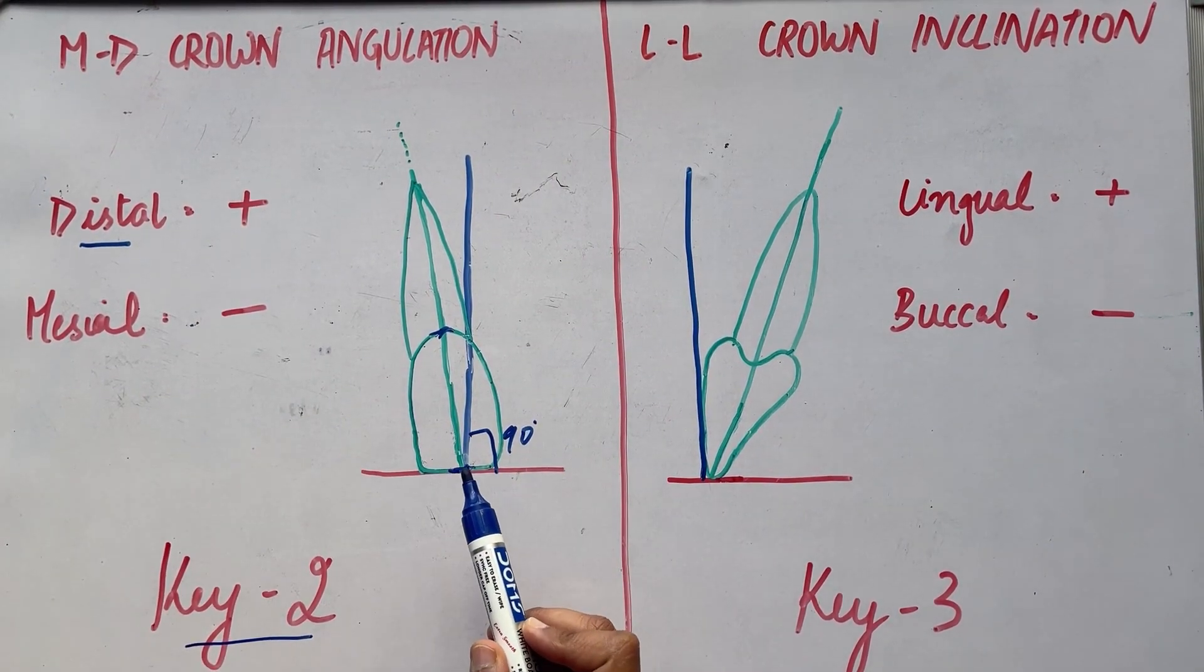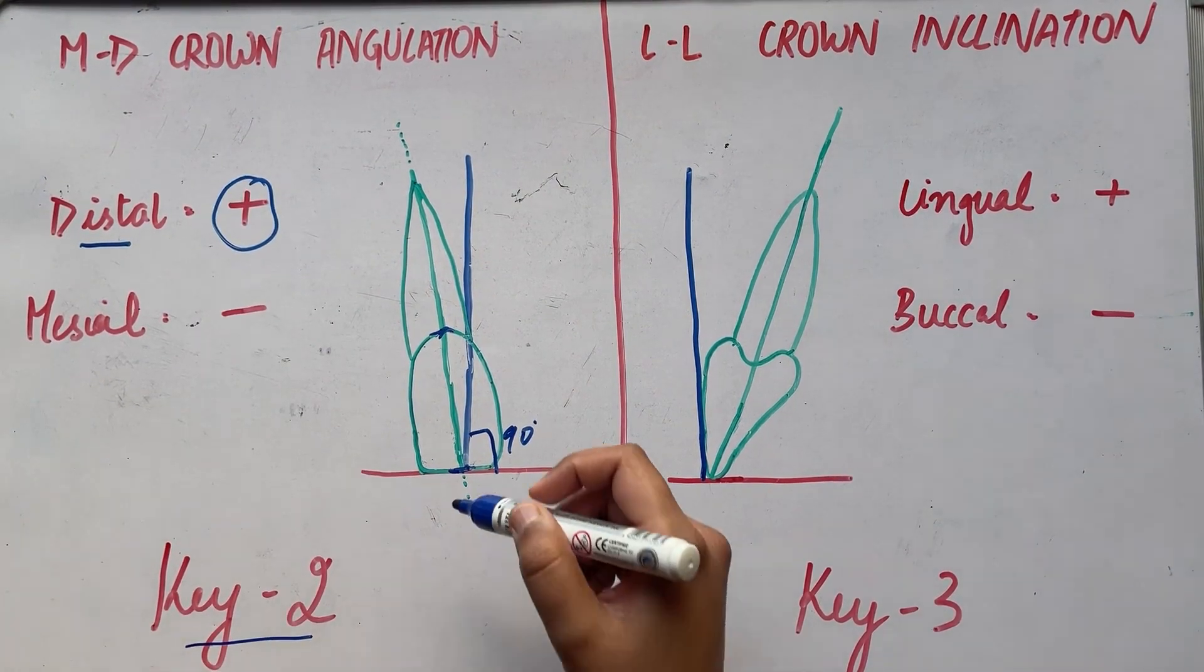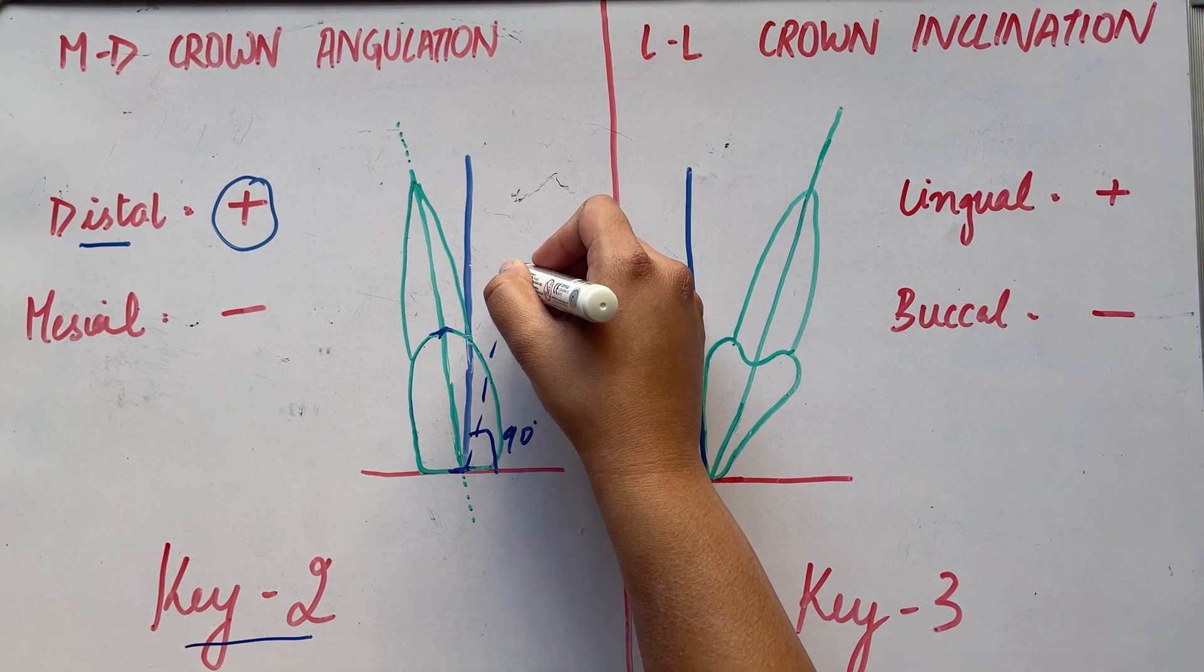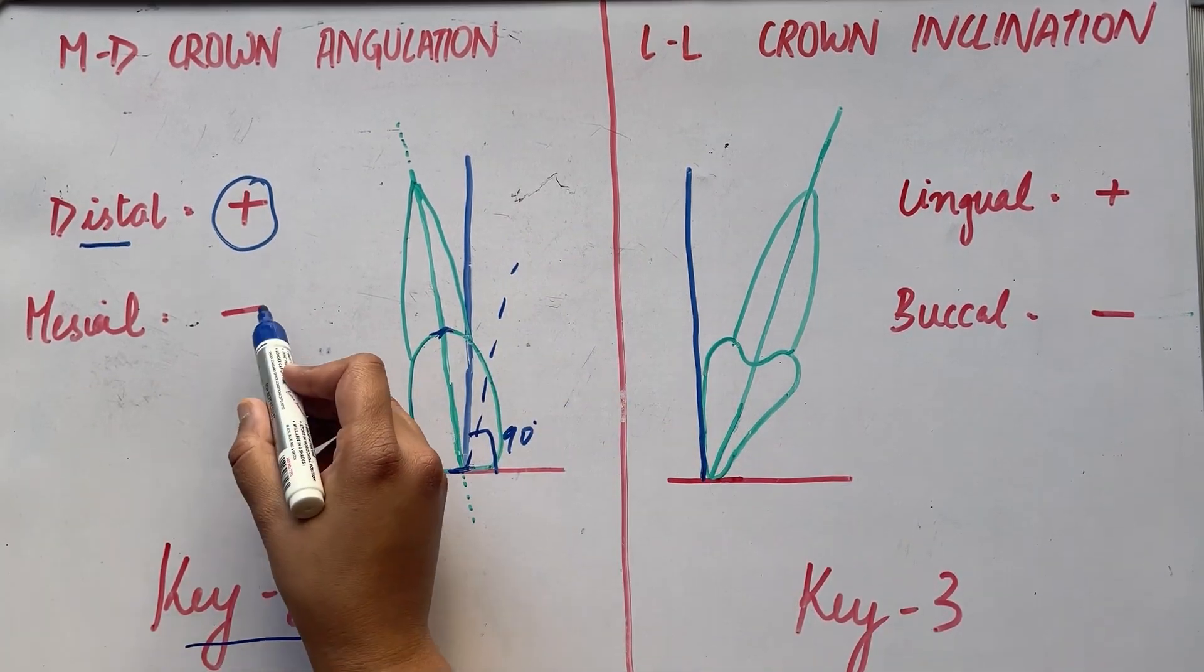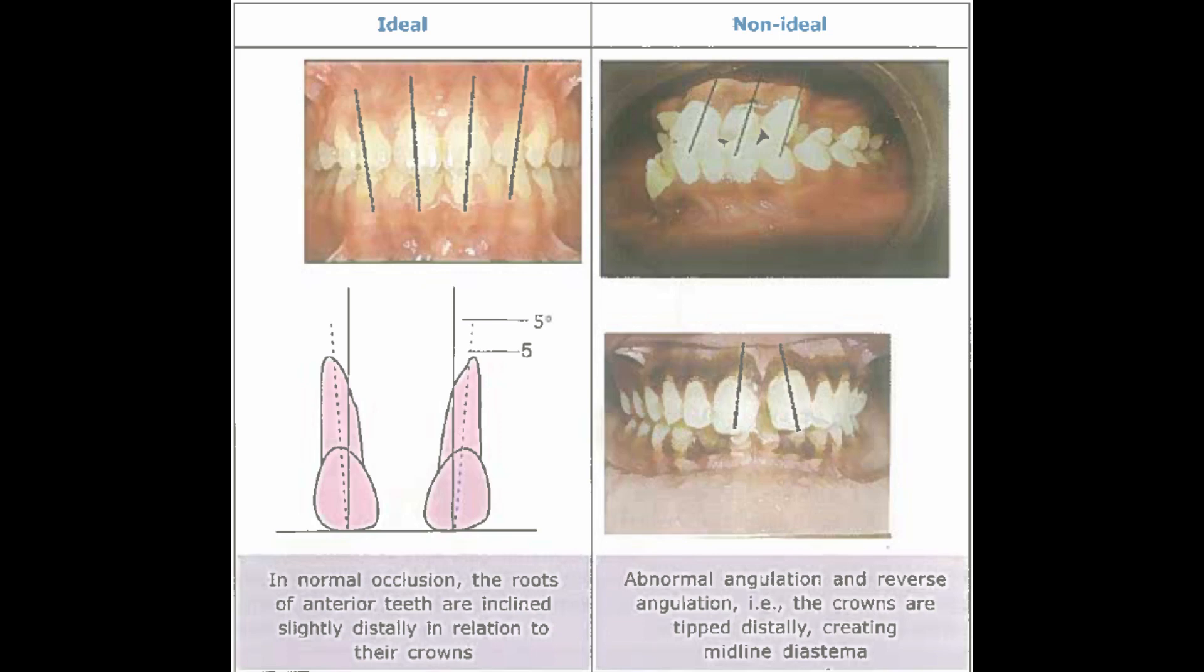A plus reading when the gingival portion of the long axis of the crown is distal to the incisal portion. A minus reading when the gingival portion of the long axis of the crown is mesial to the incisal portion. To better understand, let's see this picture. The 1st pic is ideal where there is positive crown angulation. The 4th pic is not ideal, here the crown angulation is negative.